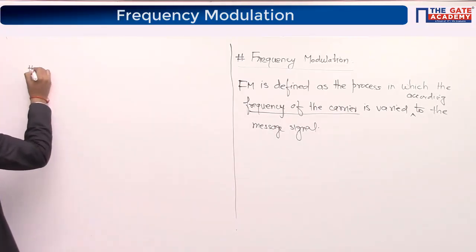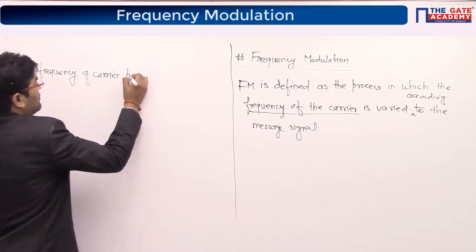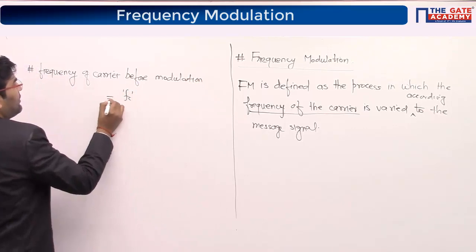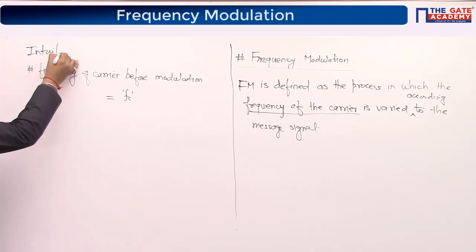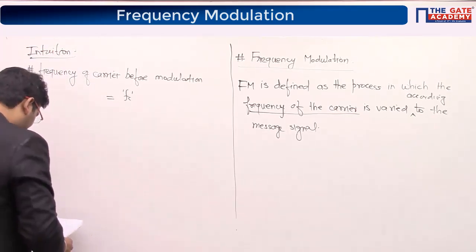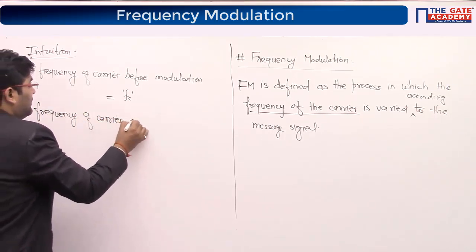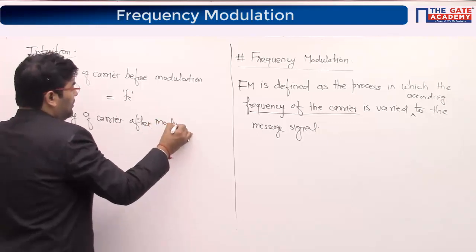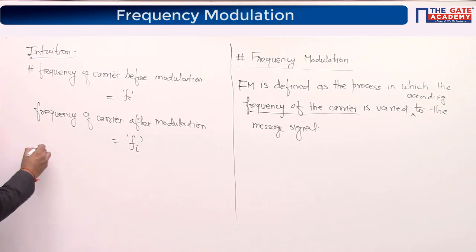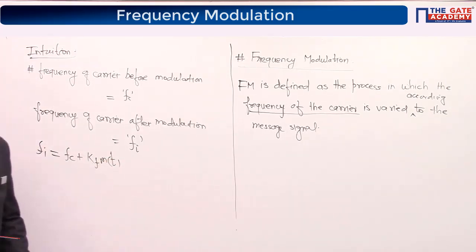Frequency of carrier before modulation is fc. After modulation, the instantaneous frequency Fi equals fc + Kf·m(t). This is the intuition of FM. Kf is the frequency sensitivity of the modulator, and Fi is known as instantaneous frequency because it is changing at every instant.